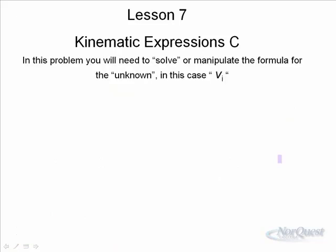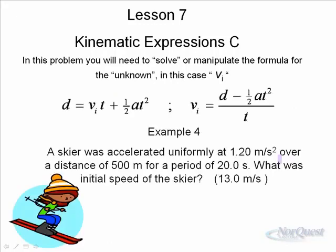We have one more example of this formula. In this problem, you will need to solve or manipulate the formula for the unknown, in this case VI. A skier was accelerated uniformly at 1.2 meters per second squared, this is your acceleration, over a distance of 500 meters, here's your distance d, for a period of 20 seconds. So we know the time. What was the initial speed of the skier?